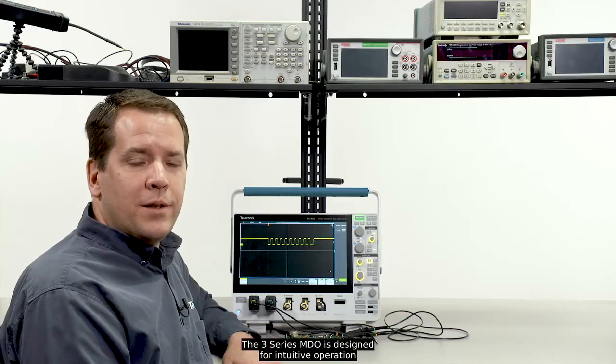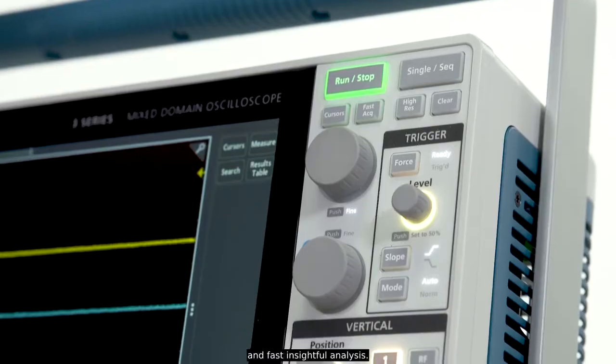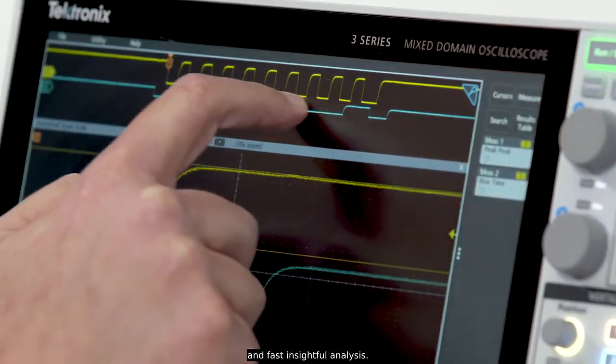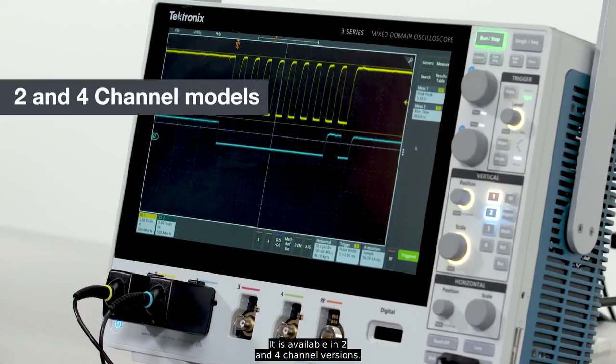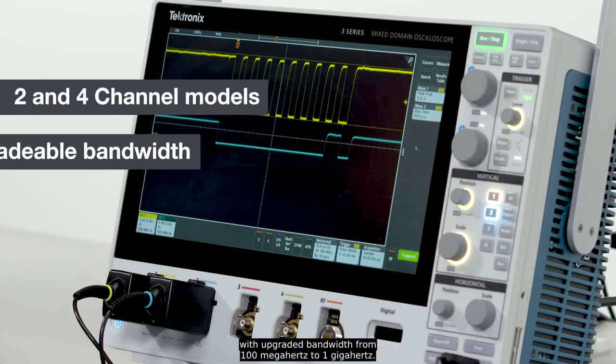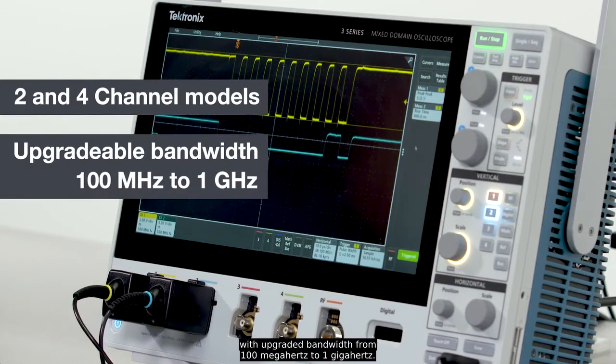The 3 Series MDO is designed for intuitive operation and fast insightful analysis. It is available in two and four channel versions with upgradable bandwidths from 100 megahertz to 1 gigahertz.